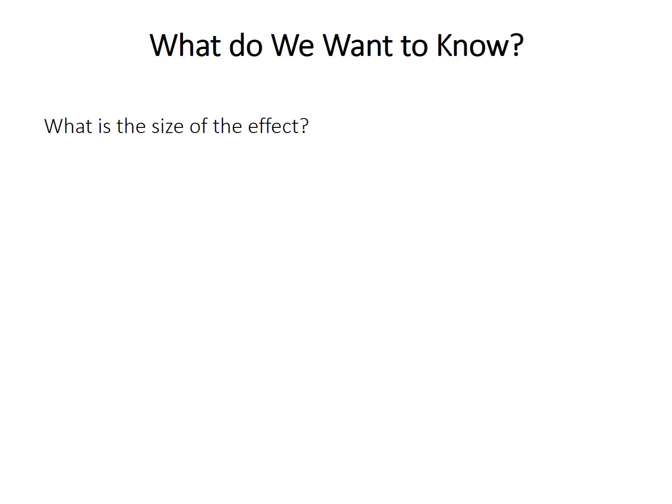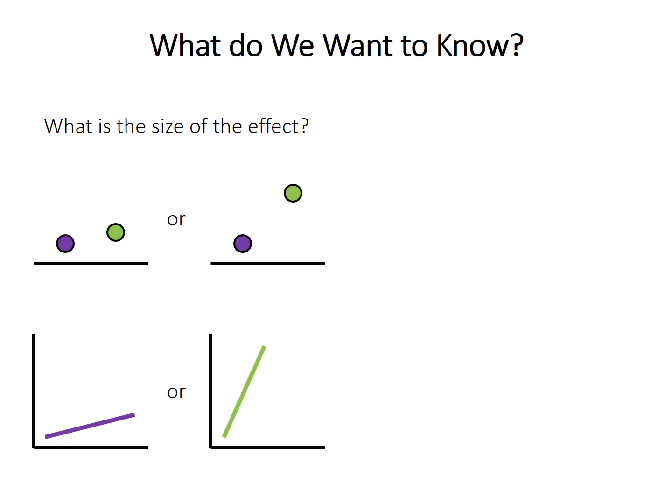So when analyzing data, there's often two things we want to know. First, and really most importantly, is what is the size of the effect that we're looking at? Is the average value in the green group here just a little bit bigger than the purple group, or a lot bigger? Does the value of the y-axis probably increase just a little bit as the x-axis increases, or does it increase a lot? Are we looking at a small effect or a big effect? We often are doing testing because we care whether an effect is important, and the size is a very meaningful part of that.